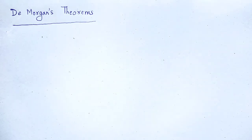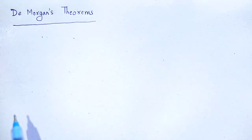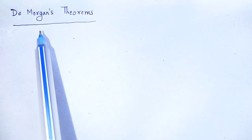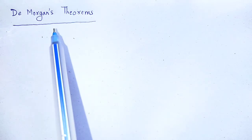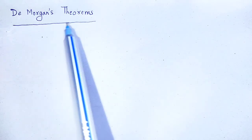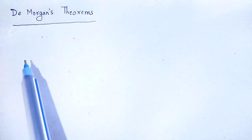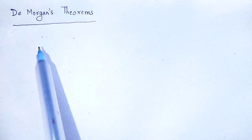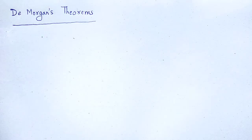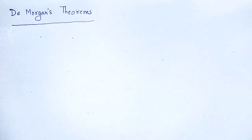De Morgan first of all developed a pair of theorems, which is known as De Morgan's Theorems, or we can say De Morgan's Rules. That theorem is extremely useful regarding the complementation of groups in a Boolean algebra.